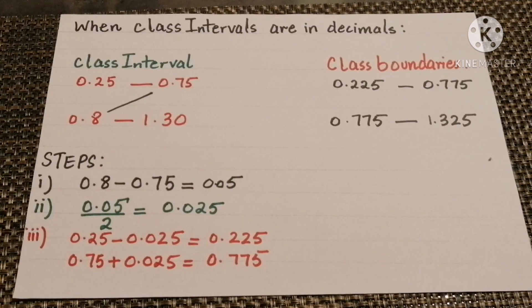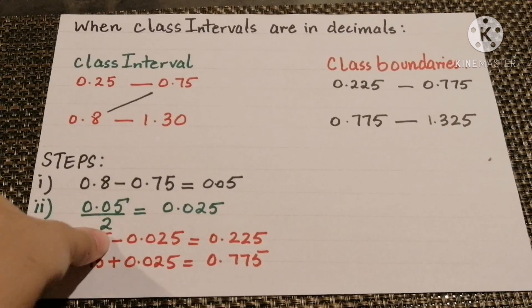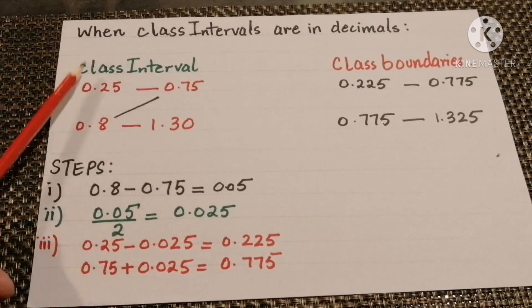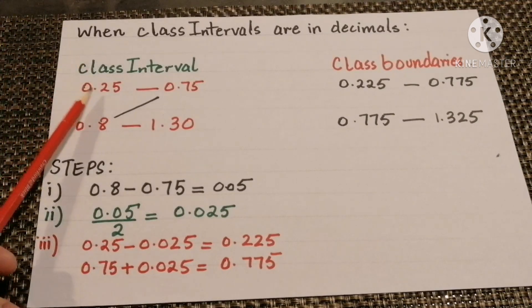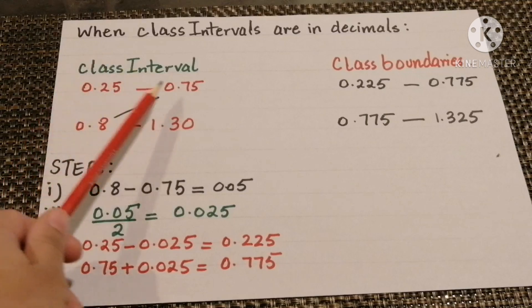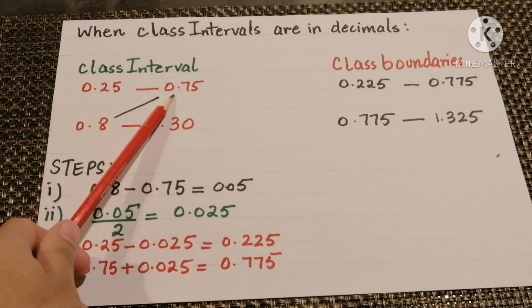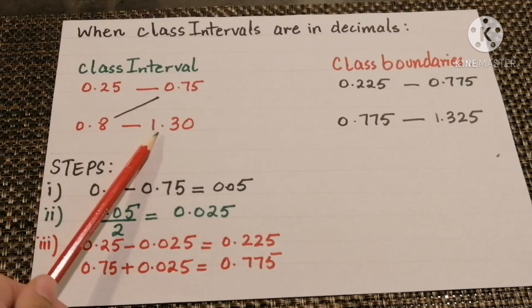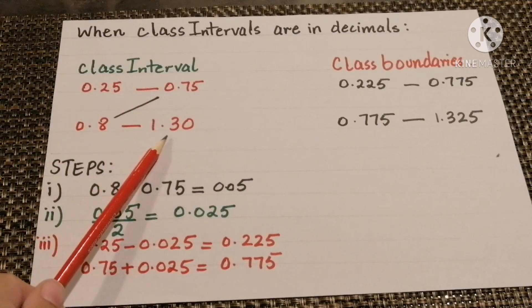Now when the class intervals are given in decimals, how do we make the class boundaries? We follow the same steps. The class intervals given are: 0.25 to 0.75, and 0.80 to 1.30.